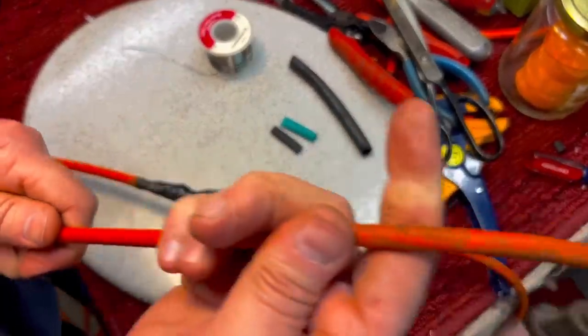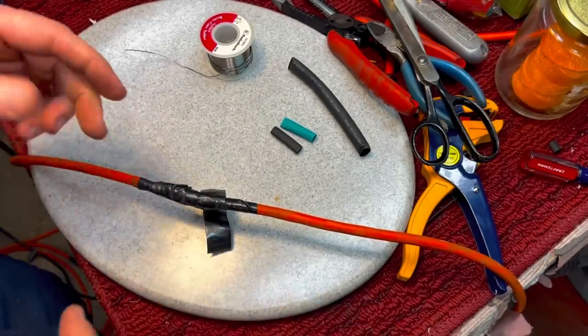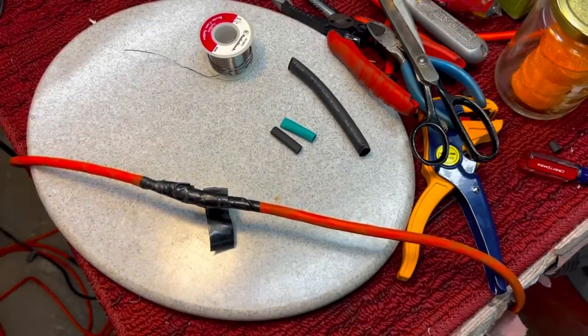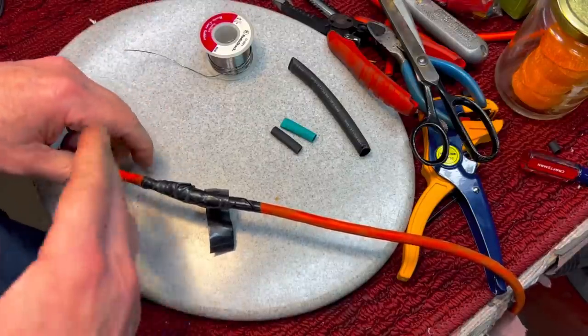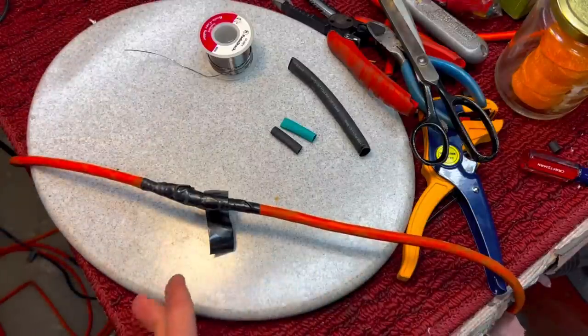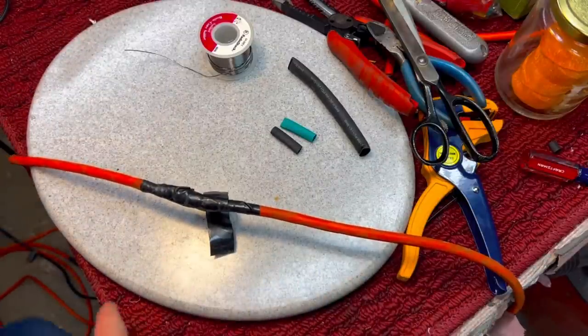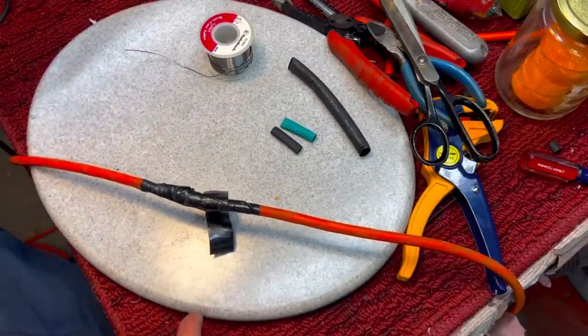The first thing you have to do when you're going to replace and fix a cut in the wire is go through the whole extension cord, make sure you don't have any more abrasions. And if you do, cut off the whole section. I went through the whole cord. We had one other I just fixed and this one here. I'm going to show you real quick how I do it.